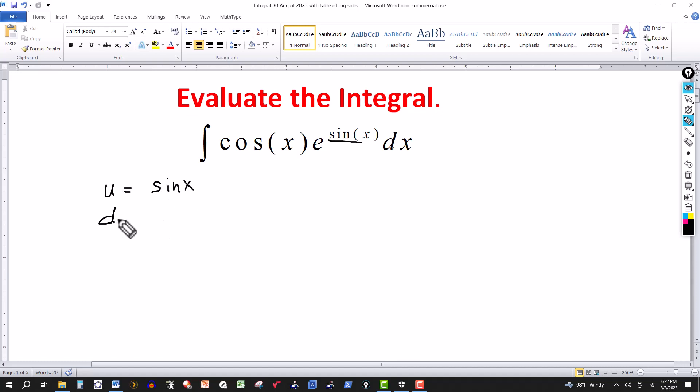Then du is equal to the derivative of sine is cosine of x, and this will be dx. Now if this is something else like an x or a tangent, then it would be a little bit different and more difficult to begin with. But in this one, it's pretty straightforward.